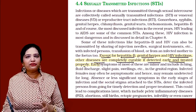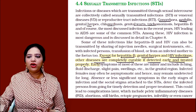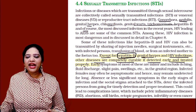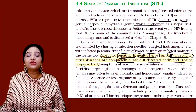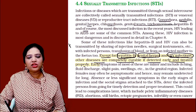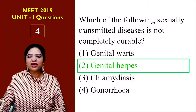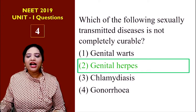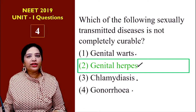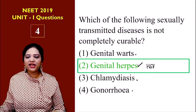Sexually transmitted infections are caused by bacteria, viruses, and some parasites. Gonorrhea, syphilis, herpes, and chlamydia are all sexually transmitted infections. Out of these, except hepatitis B, genital herpes, and HIV, the other diseases are curable because we don't have medicines to cure viral diseases like herpes. Genital herpes is caused by herpes simplex virus type 2. Chlamydiasis is a bacterial infection which is curable, and gonorrhea is caused by Neisseria gonorrhoeae which is also curable. So the answer is genital herpes.